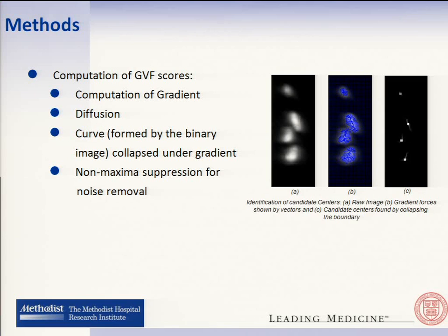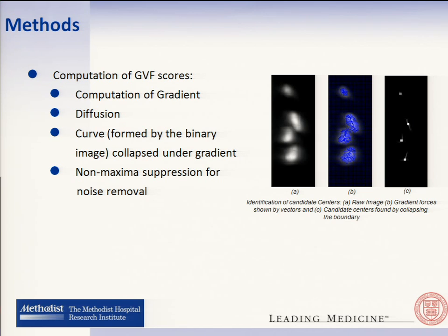This step is called the scoring method, in which for each voxel we determine whether it belongs to the centerline or not. This step uses a method called gradient vector flow. Originally, this was proposed to guide the active contours method to conform to the actual boundary so that objects could be segmented. But we have used it in an inverse manner: we take the original image, binarize it to get the overall boundary of the object, then take the GVF forces and collapse these boundaries to their center points. After applying non-maximal suppression to remove spurious points, we can get approximate center points for all the axons present.